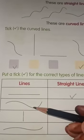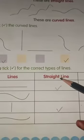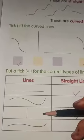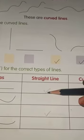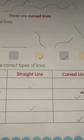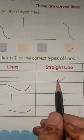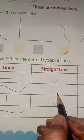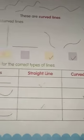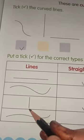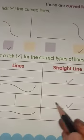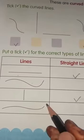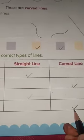Next, in this table, you have to put a tick for the correct type of line. If it is straight, tick under straight; if it is curved, tick under curved. So this is the straight line — tick on straight here. This one is curved — tick here. This one is also a straight line — tick mark here. And next we have a curved line — so tick here.